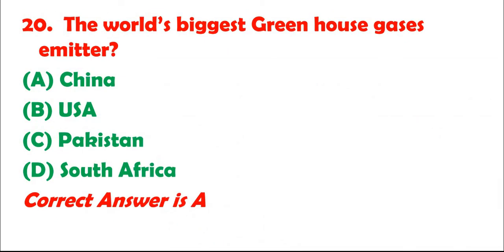Question 20: The world's biggest greenhouse gases emitter: A. China. B. USA. C. Pakistan. D. South Africa. Correct answer is A.